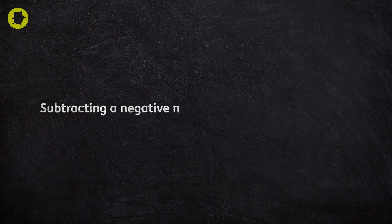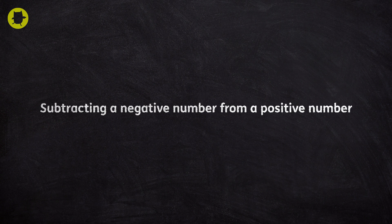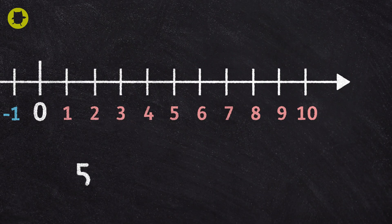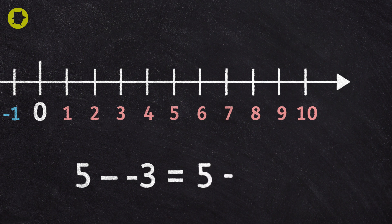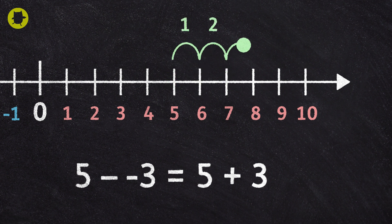Here's another example. This time, a positive number subtract a negative number. Instead of subtracting a negative, we add a positive. So minus negative three becomes add three. This is now an addition problem. Five subtract negative three is eight.